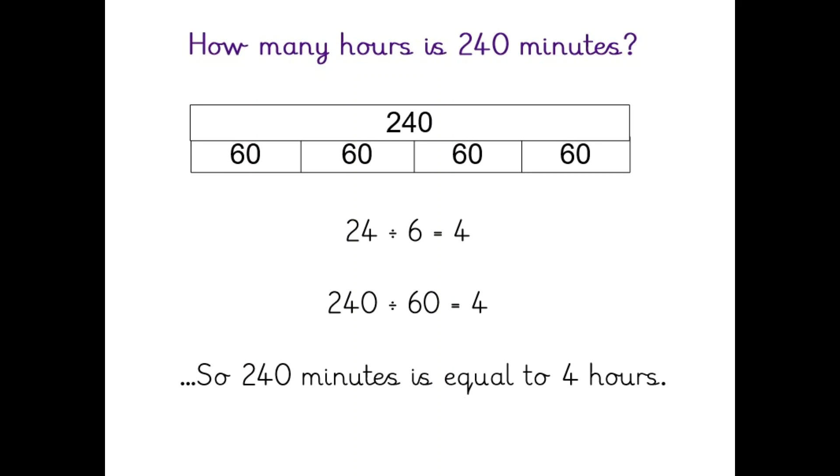You might have a question that's the other way around. This one asks how many hours are there in 240 minutes? So you could draw a bar model like I've done. 240 is the amount of minutes and we're dividing it into numbers of hours. As you can see, I've got four lots of 60. So there are four hours, which make up 240 minutes.